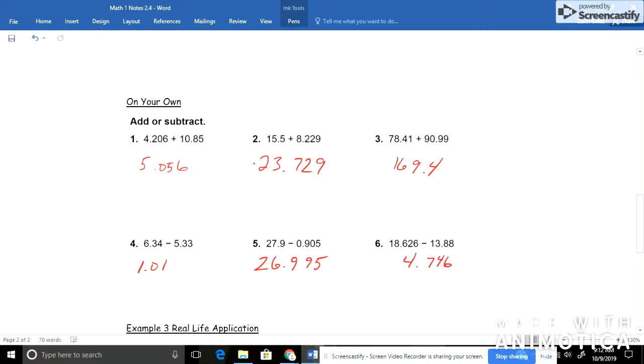One thing I don't want you to forget about, and I think you should be doing on your tests, is estimating or checking to make sure it's reasonable. Just do it in your head quick. So 4.2 would round to 4. Plus 10.85 would round to 11. 11 plus 4 would give me around 15. Look, I made a simple mistake. I forgot to write my 1. So it should be 15.056. Good thing I went back and estimated or checked. That was a silly mistake. I obviously knew the answer. I just wrote it down wrong.